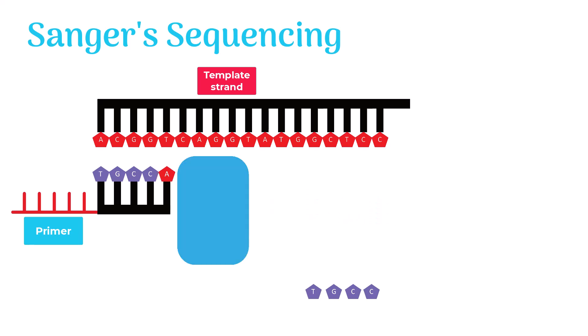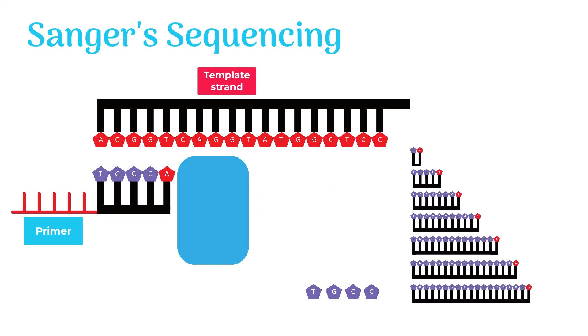This whole process keeps repeating several times. As a result, several DNA strands of different lengths are formed inside the tube. If dideoxy ATP is added early, the strand will be shorter in length. The later addition of dideoxy ATP will make the length of the strand longer.